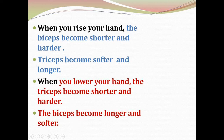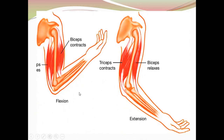Here you can see the picture showing the contraction and relaxation of biceps and triceps muscles. When the biceps contracts and triceps relaxes, we can flex the hand. When the biceps relaxes and triceps contracts, we can extend the hand properly.